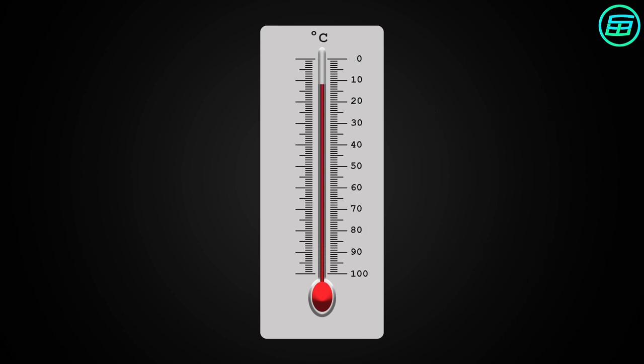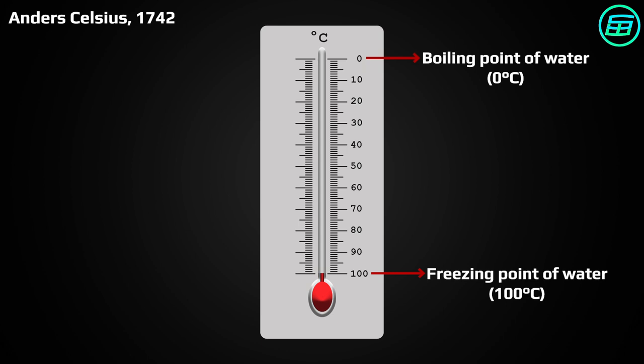In 1742, Anders Celsius developed a new scale with zero at the boiling point and 100 at the freezing point of water. Yes, you heard right, zero at the boiling point and 100 at the freezing point. Celsius wanted to avoid negative numbers on his scale since Sweden's weather is mostly cold, especially in winter.